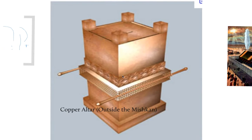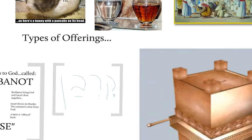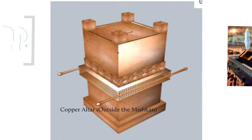This copper altar is going to be outside the Mishkan. All the korbanot — meaning animals — would be burned on this altar. Notice it's copper: the less valuable metal on the outside, while gold is on the inside. Plus, you're going to be burning stuff on it — who wants burning meat inside a building? So the copper altar is outside the Mishkan.